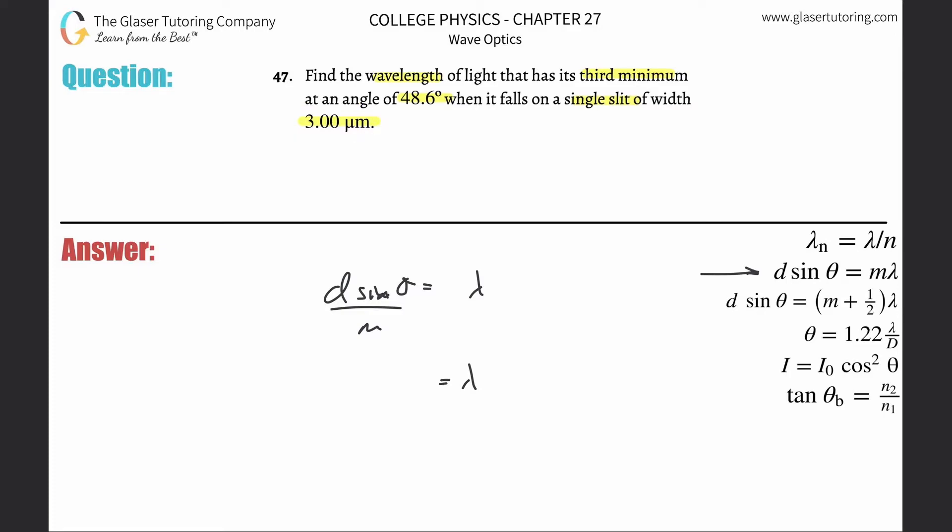Just take three and multiply it by 10 to the minus sixth. What's the angle? They told us it's 48.6 degrees. What's the m? Well, it's the third order minimum, so m is three.